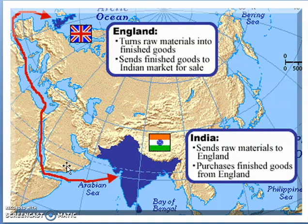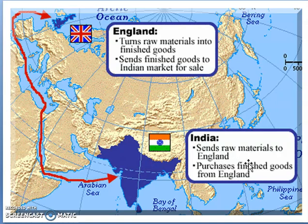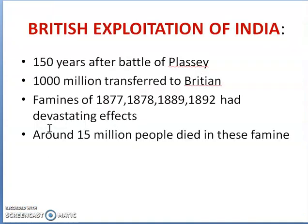I want to show you the routes from where they were trading — from India to England. Basically, the route was through the Arabian Sea. England would turn the raw materials into finished goods and send them back to the Indian market for sale. So India sent the raw materials to England and purchased the finished goods from England. This was the route they used to come to India.